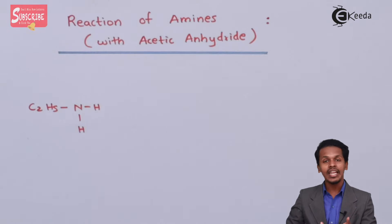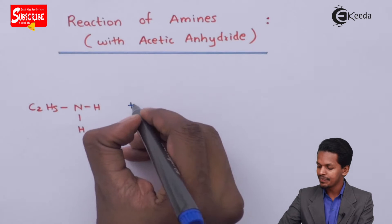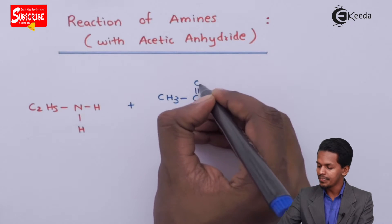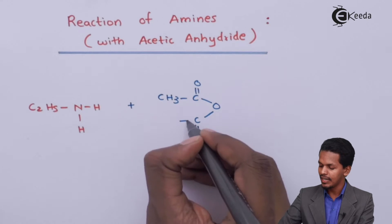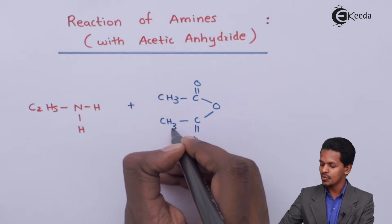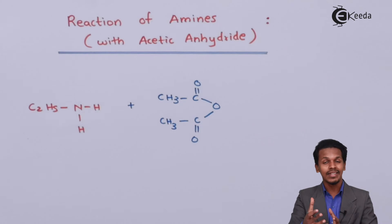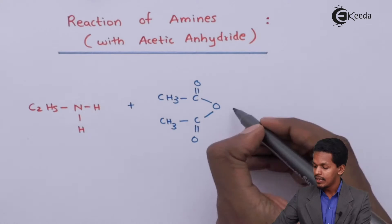And suppose if I am reacting it with acetic anhydride, that is CH3, C double bond O, O. I am writing the same structure here so that it would be very much easy for us to understand the reaction and estimate the product.